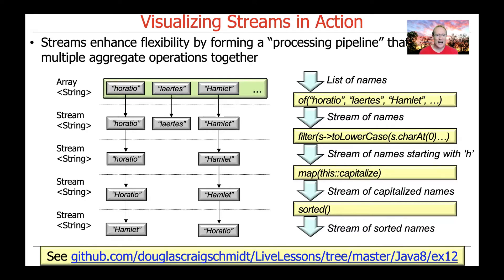The example we're going to look at here is what we've been talking about before: the example of the Hamlet characters, and we're going to filter them and so on. Rather than looking just at the source code, I'm also going to visualize how things work, or at least logically how things work under the hood. Hopefully this will help make it more intuitive — right-brain-focused so you can see the big picture — combining that with the left-brain-focused part, which is the code. Put those two things together and hopefully the light bulbs will go off and it'll be even more clear what's happening.